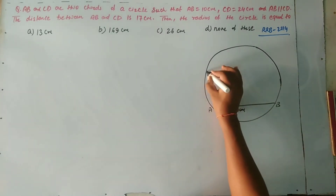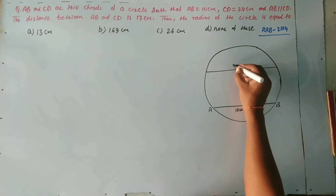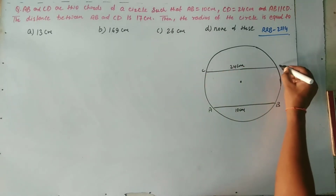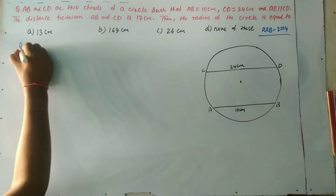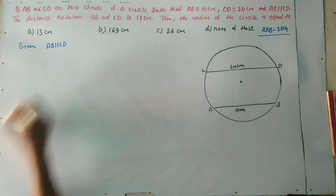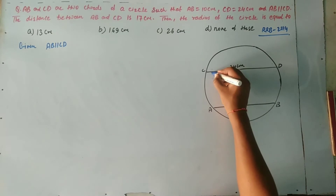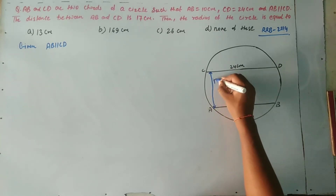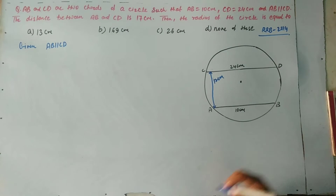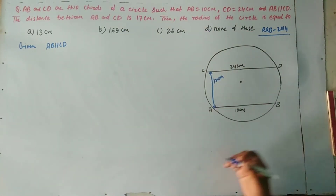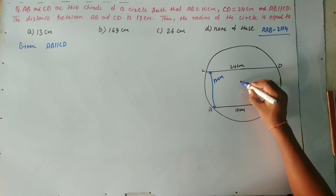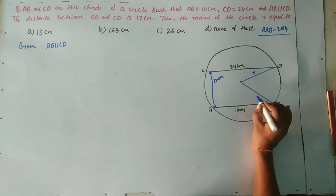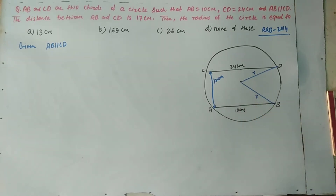अब इसका next chord है CD, 24 cm। यह किसके parallel है? AB के parallel है। CD हमारा AB के parallel है। AB parallel to CD — यह question में दिया हुआ है। और AB और CD के बीच का जो distance है वह दिया हुआ है 17 cm। अब हमें find करना है radius of the circle, यानी कि R — circle का radius उसे find करना है।